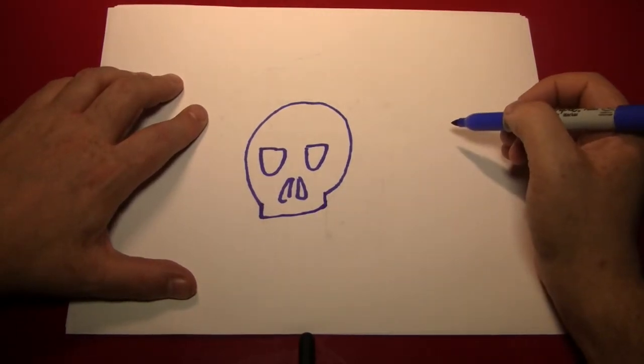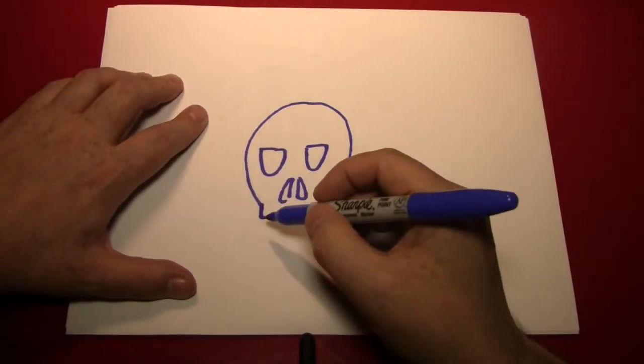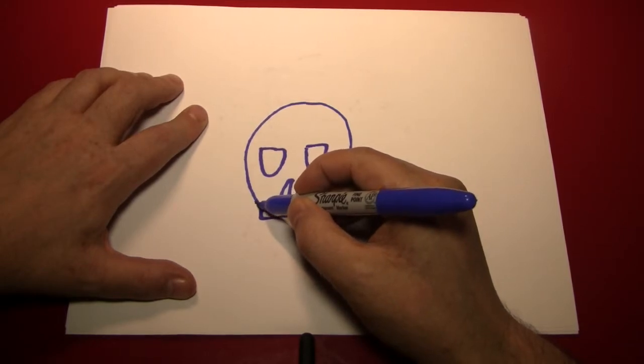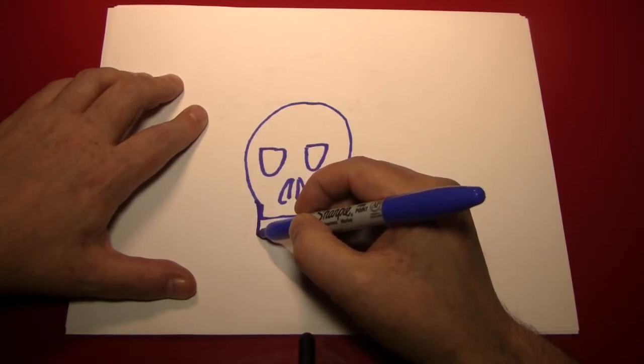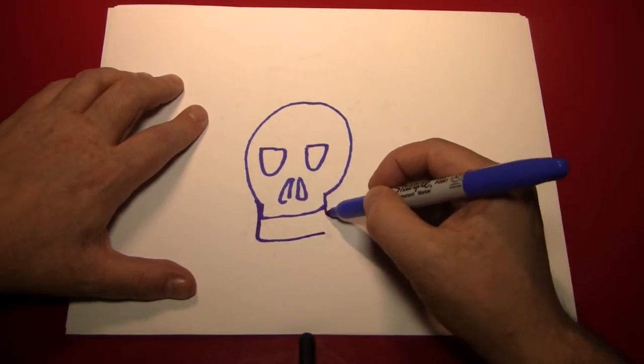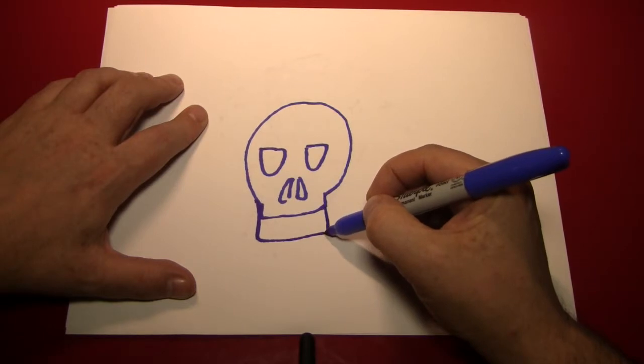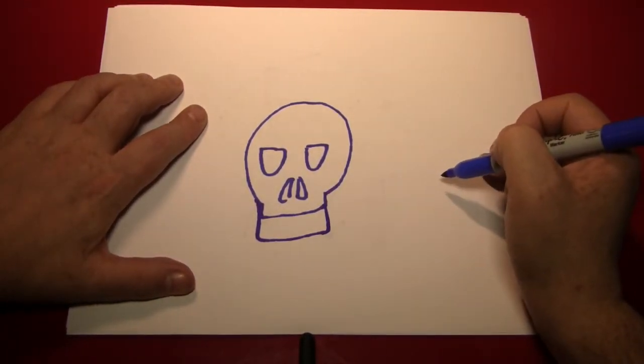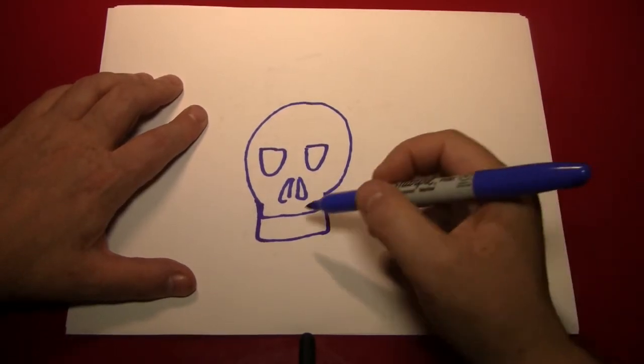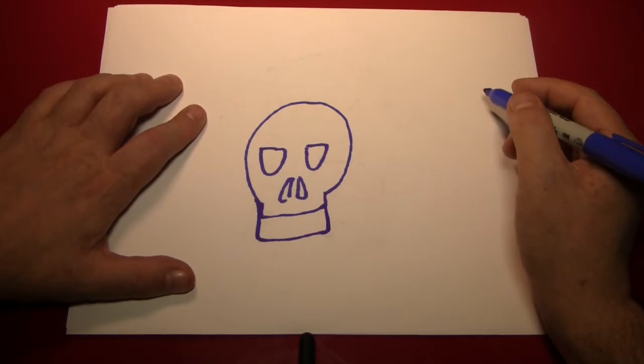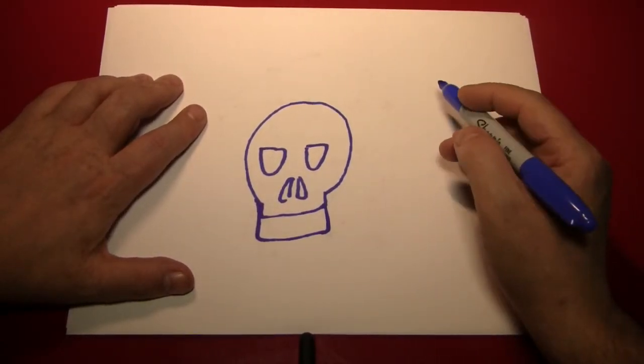Then we're going to create the bottom jaw by starting around the same place, but just coming down further before going across. Do it the same on both sides, and we're on our way. This guy seems to have a rather lantern-esque jaw. I wonder what your skull is looking like.